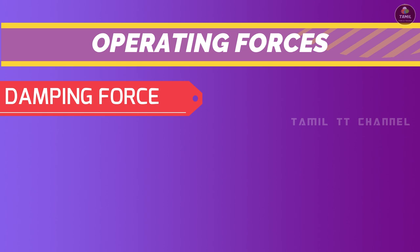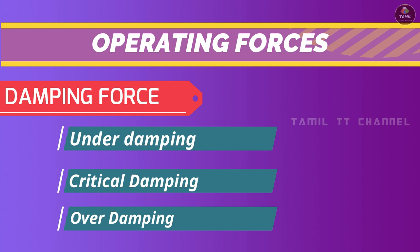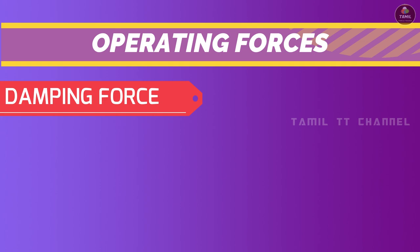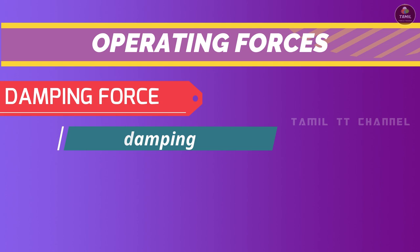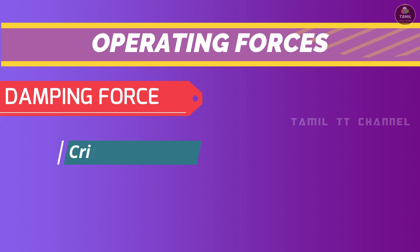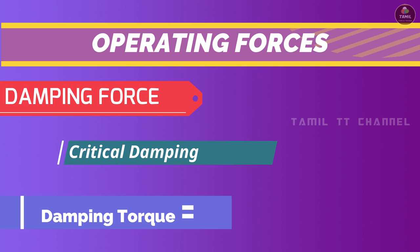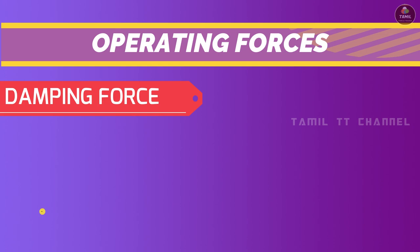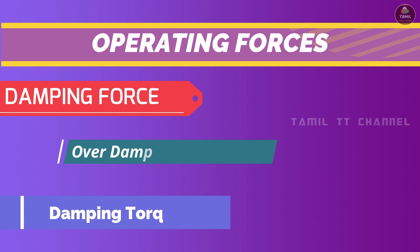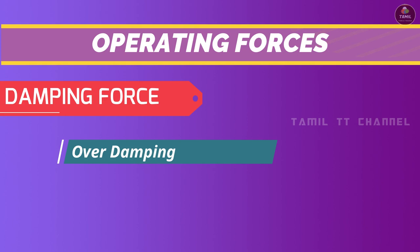In underdamping, the damping force is very low, so the pointer oscillates slowly before coming to rest. In critical damping, the damping force is correct — the pointer moves quickly and smoothly to the rest position without oscillation. In overdamping, the pointer moves too slowly to reach the rest position.